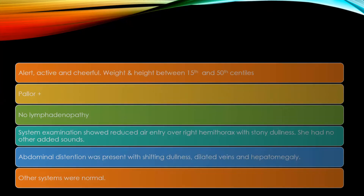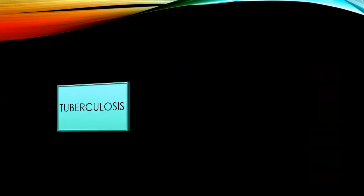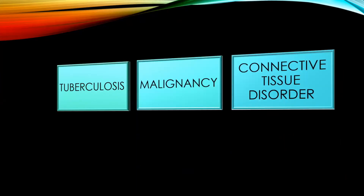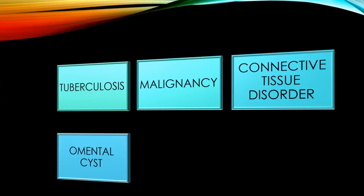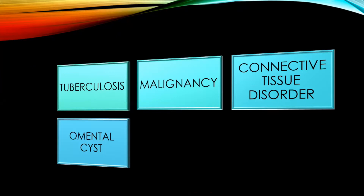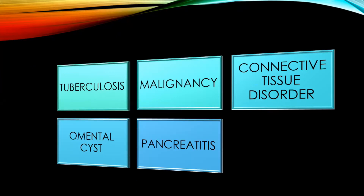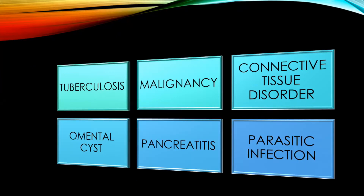At this point, clinically, we had the following differential diagnoses in mind: 1. Tuberculosis, 2. Malignancy, 3. Connective tissue disorder, 4. Omental cyst, 5. Pancreatitis, and parasitic infection last.